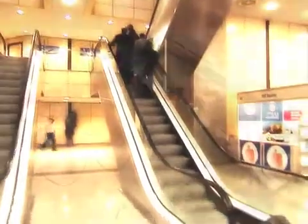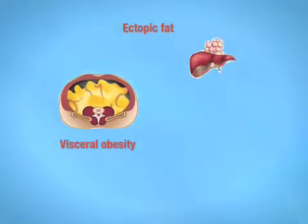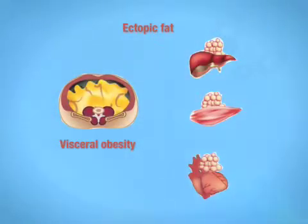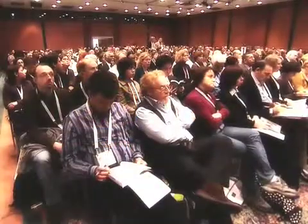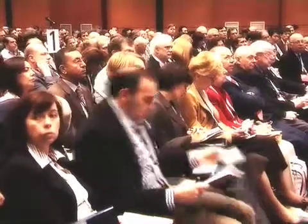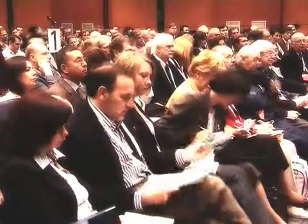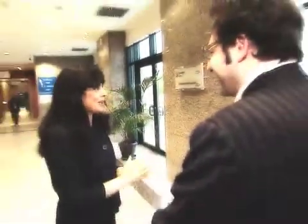Ectopic fat is an accumulation of fat in areas where it should not normally be found, such as the liver, the muscles, the heart, and to some extent the pancreas. The session at the EAS discussed the effects of ectopic fat on the heart — a very relevant subject because ectopic fat is related to the development of many chronic disorders, which are responsible for morbidity and mortality today.